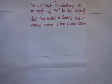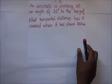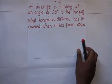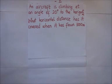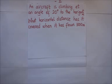An aircraft is climbing at an angle of 20 degrees to the horizontal. What horizontal distance has it covered when it has flown 100 meters?